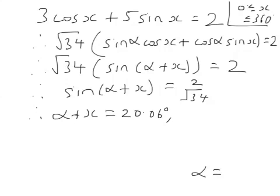So alpha plus x is inverse sine of 2 over root 34, which is 20.06 degrees. But obviously there are other angles. So it could be 180 minus that, which is 159.94, or it could be 360 plus these, that's 380.06, or 519.94, and so on.